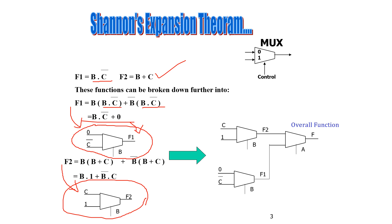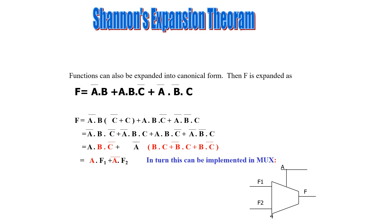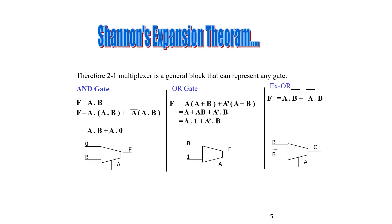Wherever F1 and F2 appear in the previous slides, they can be replaced by these MUX implementations. This is the overall logic function implemented by using multiplexers, derived from Shannon's Expansion Theorem. You can also do this using the canonical form — where a missing variable like C is represented as C plus C̄, giving AF1 plus ĀF2.